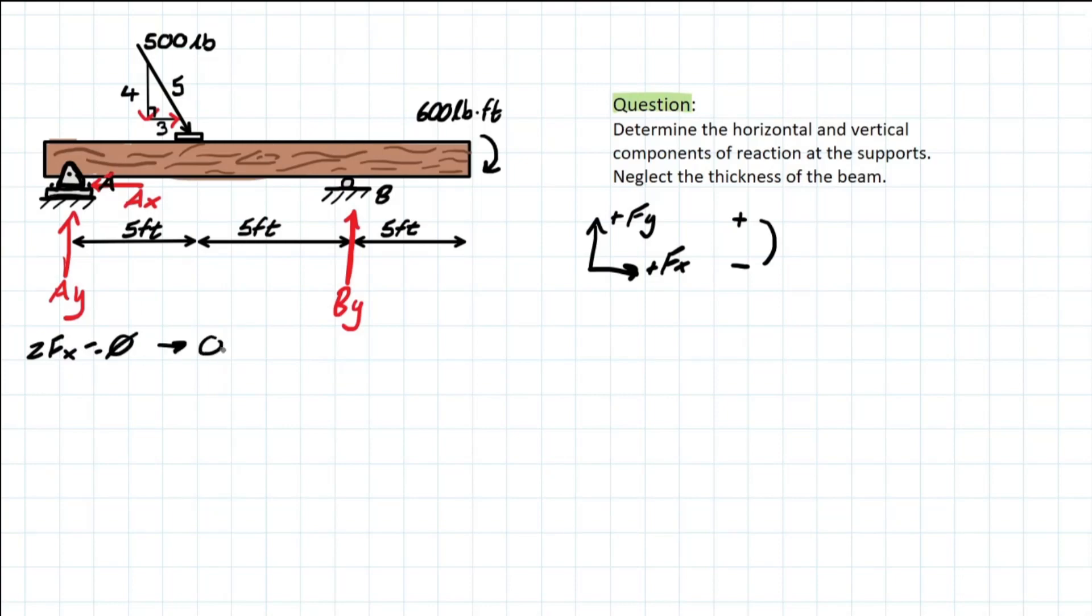So when we solve for this, we are going to be left with negative Ax because it's acting negatively based on our convention, and we have positive this x component of the 500. How do we solve for that? Well, we consider the 500 pound force, but we also need to consider the special triangle. So we have multiplied by 3 over 5. Why did I do this?